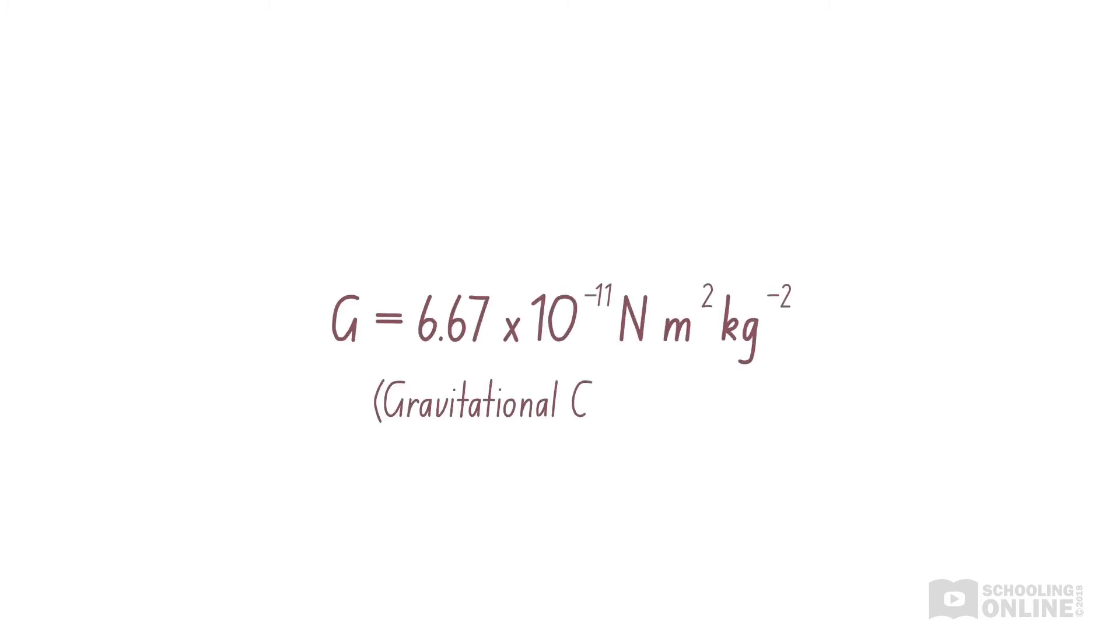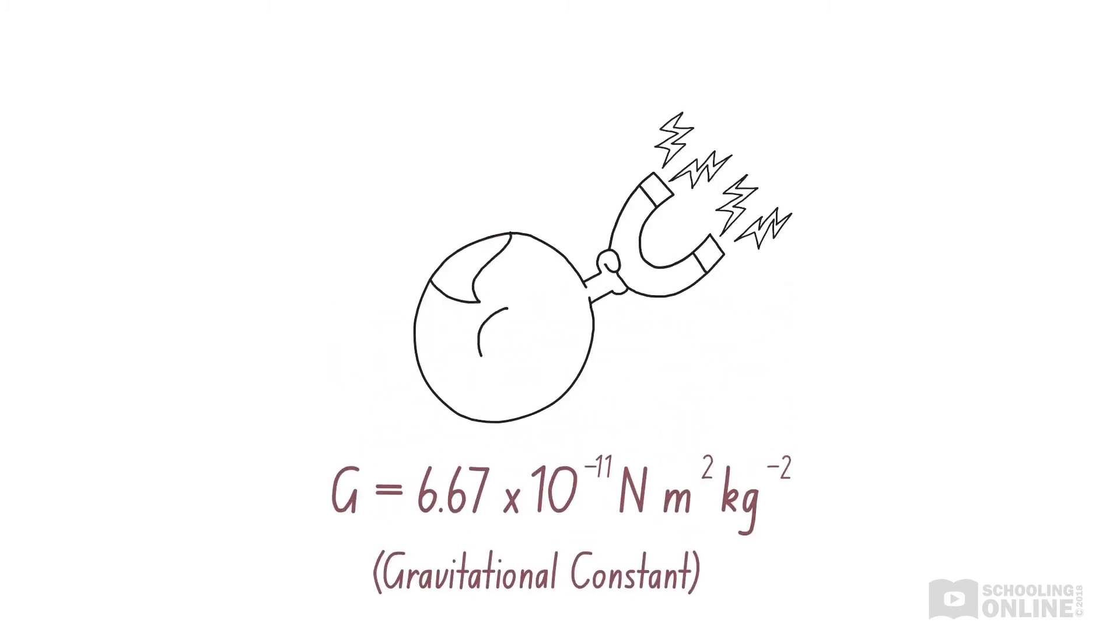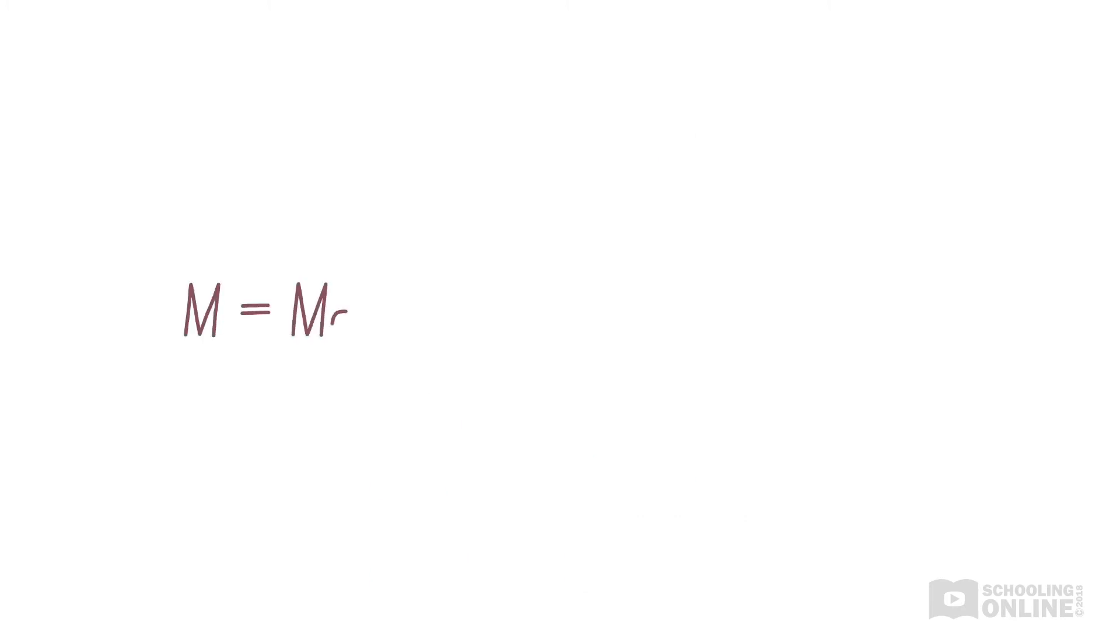G is the gravitational constant, which is given in the data booklet. Uppercase M is the mass of the heavier object in kilograms.